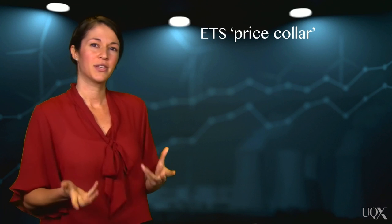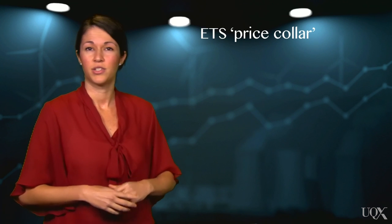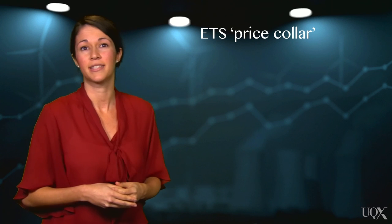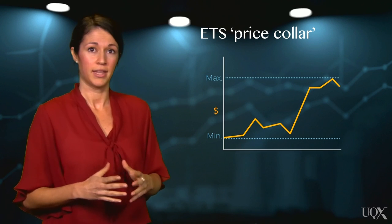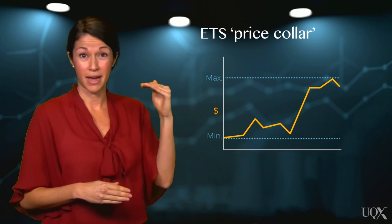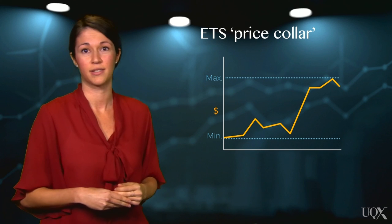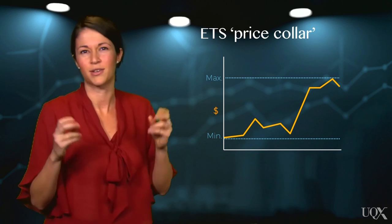Governments can use additional design features to ensure some degree of certainty in the carbon price. For example, they can set a minimum and a maximum auction price for allowances — the so-called price collar.